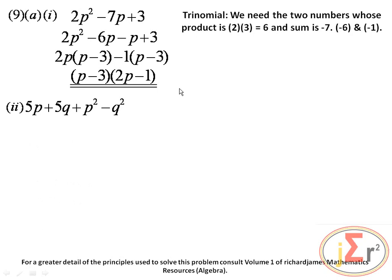We have 5p plus 5q plus p squared minus q squared, and we need to factorize that completely. There is no problem seeing a common factor of 5 in the first two terms. Students sometimes expect to see the difference of two squares all by itself, but here it is involved in a larger expression.